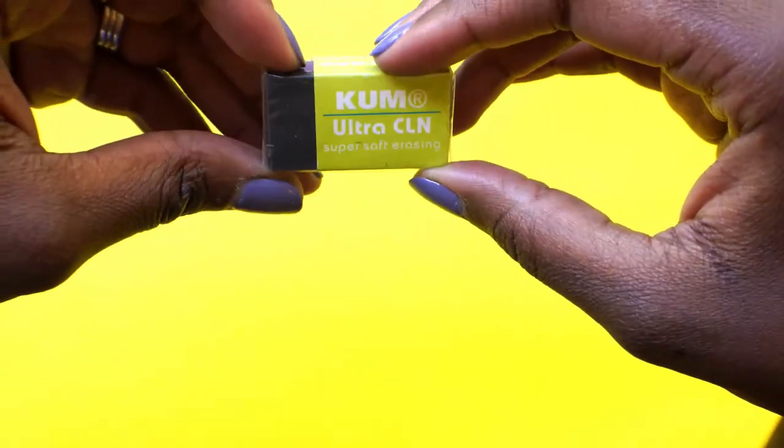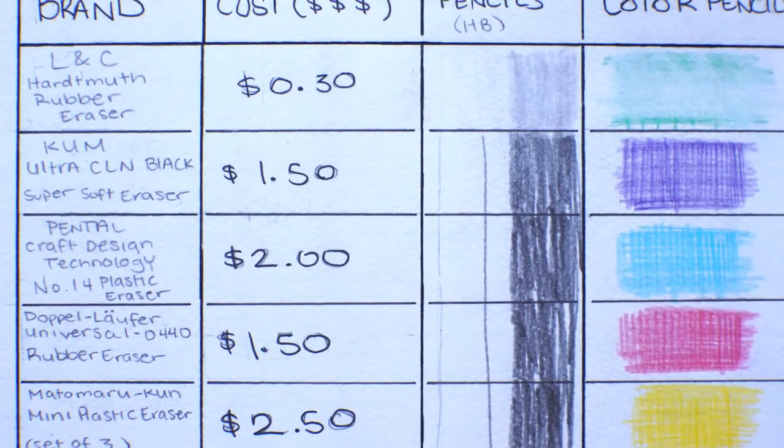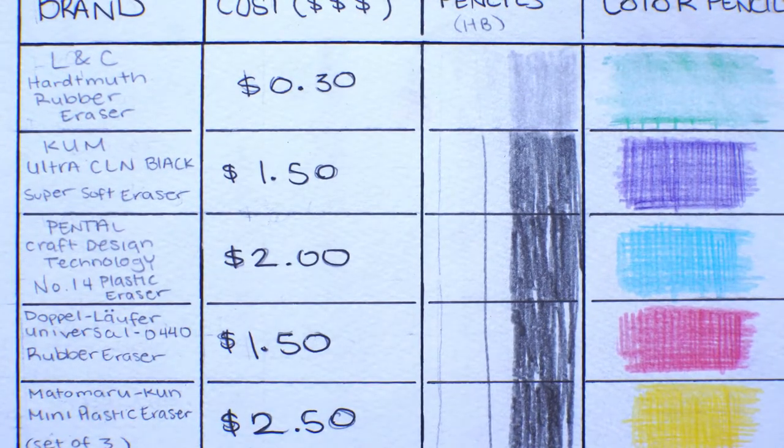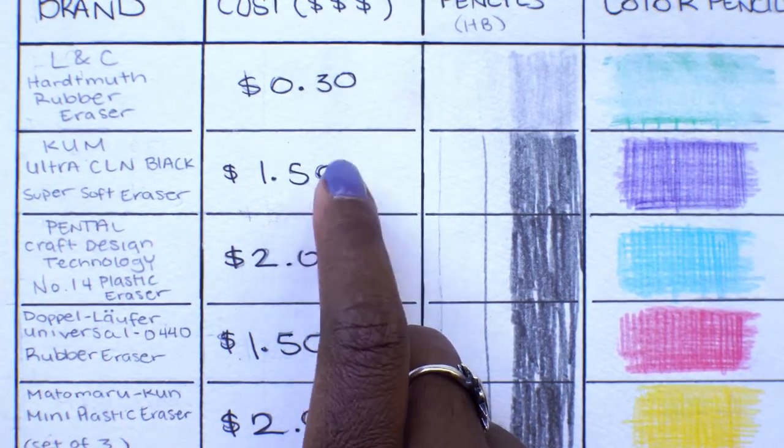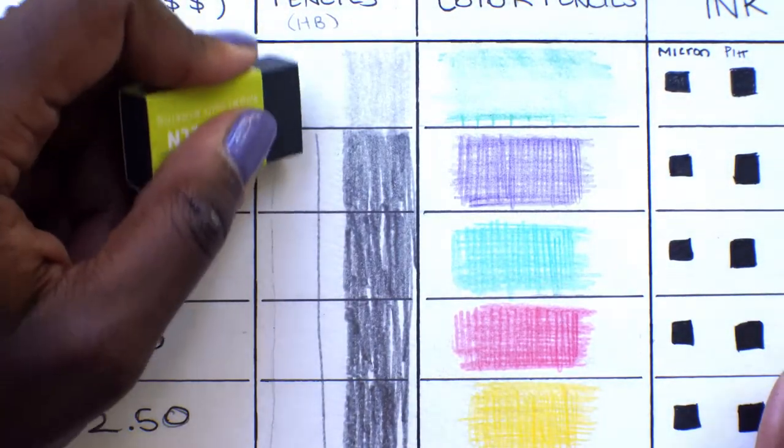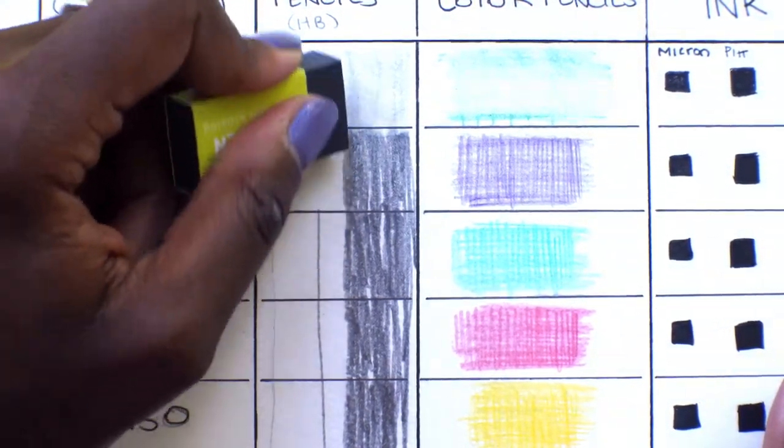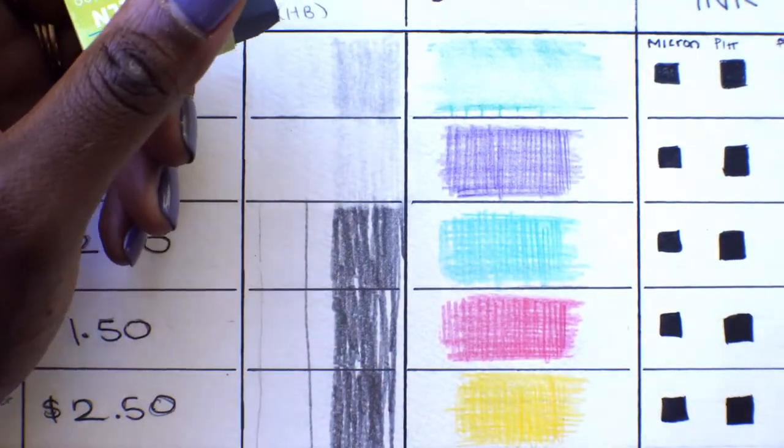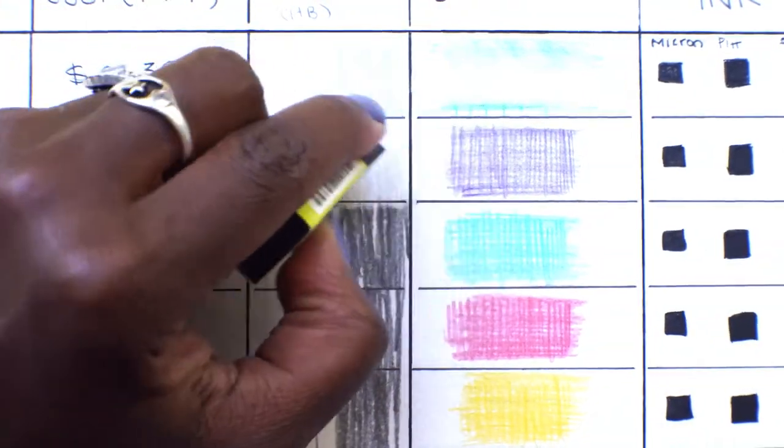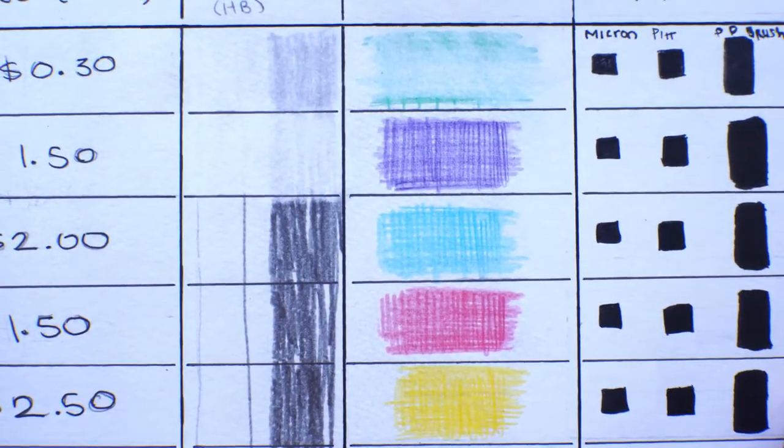So, the next eraser is the KUM Ultra Clean Super Soft Erasing Eraser. So, the KUM Eraser, Ultra Clean Black Eraser is $1.50. Again, this is the price for the shop that I went to, CW. Alright. Nope. Not too bad. This is nice. I kinda like this. Dude. Okay, somebody. Somebody's impatiently honking. I don't know what that's about. That's not bad. That is not bad. Check that out.